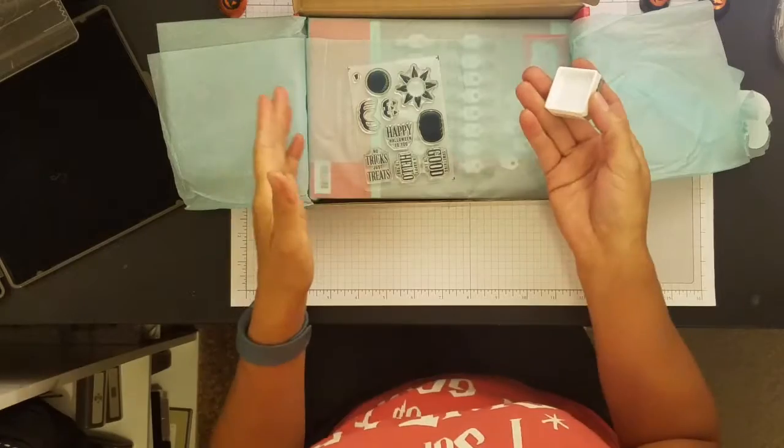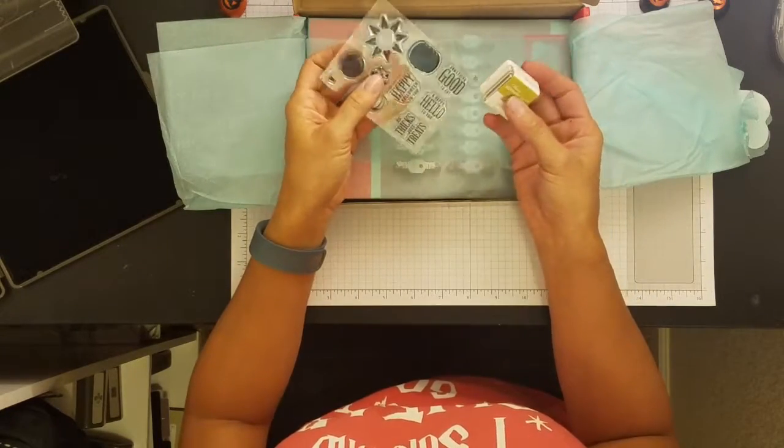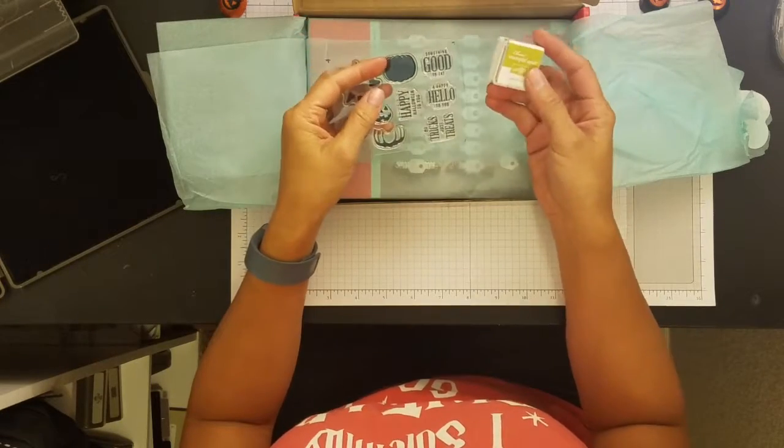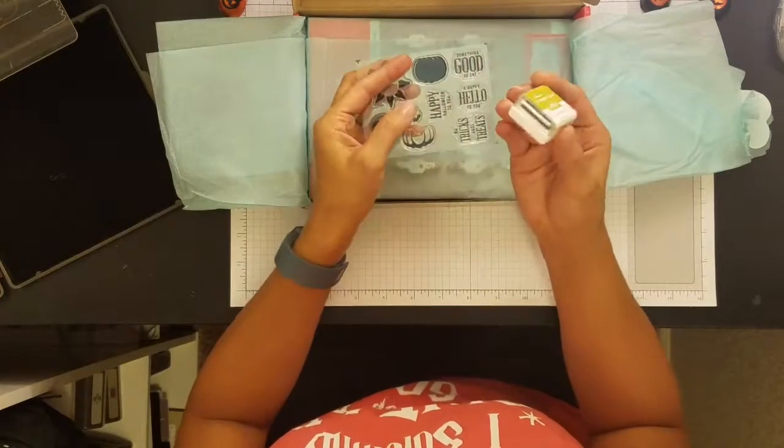If you don't know about Paper Pumpkin, it's a kit. You subscribe to it. It's $19.95 a month and in the kit you get, you always get one ink spot. Sometimes you'll get two. This is like a mini ink pad.